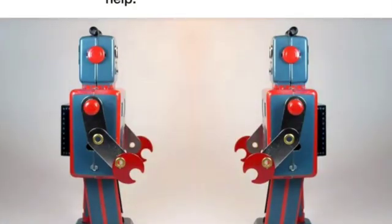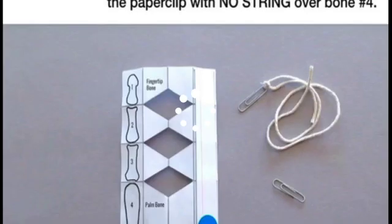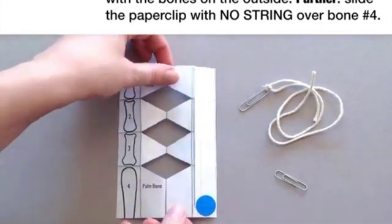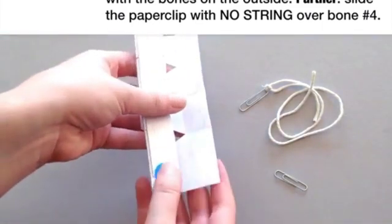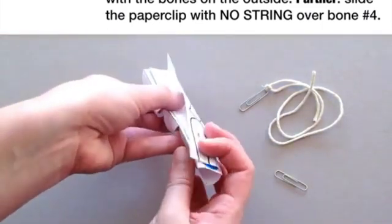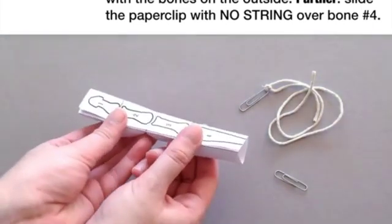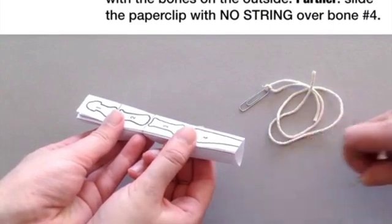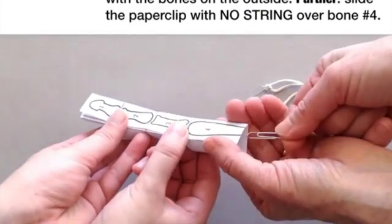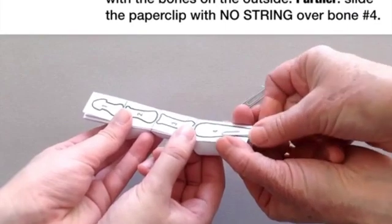The next steps are tricky. Find a partner to help. Watch this whole step before you do anything. Fold the paper into a triangular tube like this with the bones on the outside. Then, partner, you're going to slide the paper clip with no string over bone number 4 to hold the tube closed.